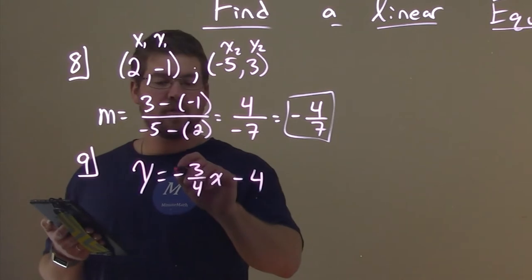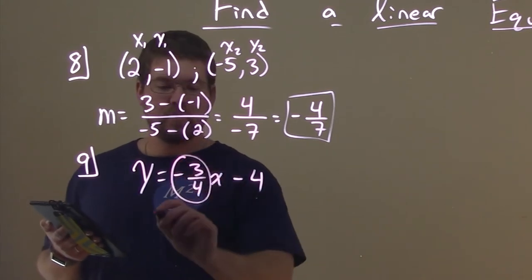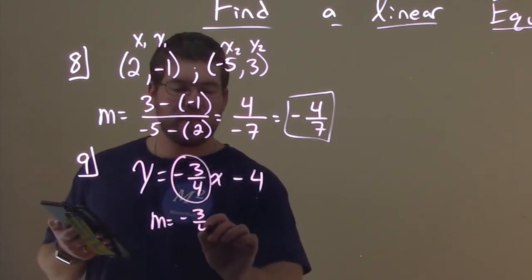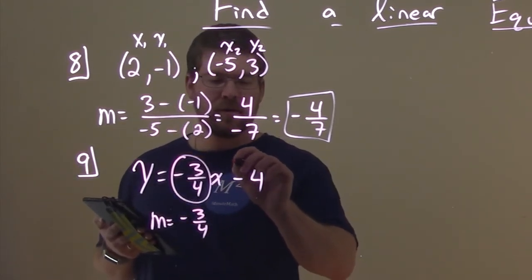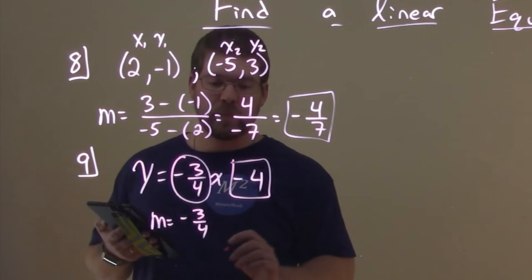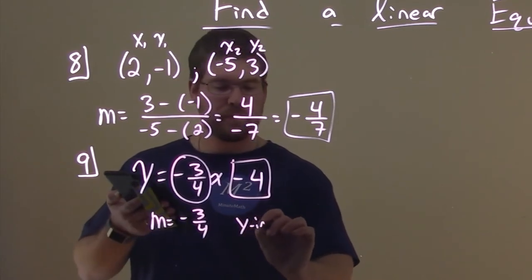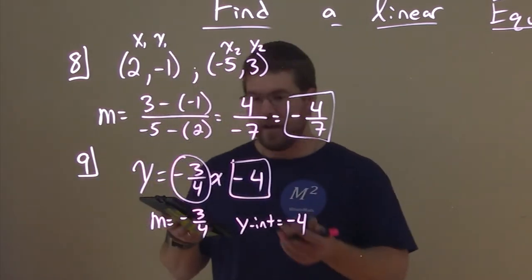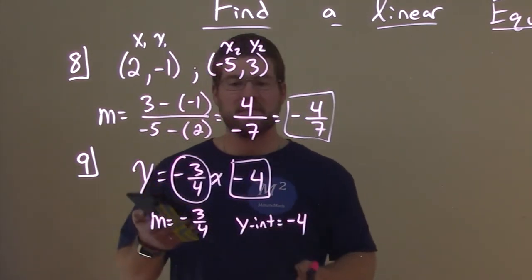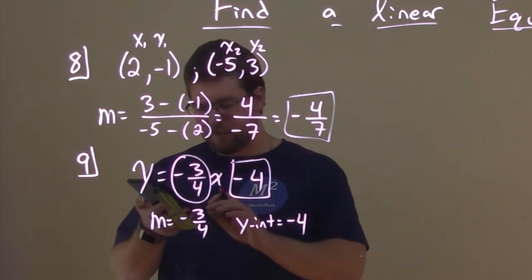M is our slope here. So this thing right here, M equals negative 3 fourths. That's the slope within this equation. Our Y-intercept here is at minus 4. So our Y-intercept equals minus 4. And now we have found our slope and Y-intercept of this line.